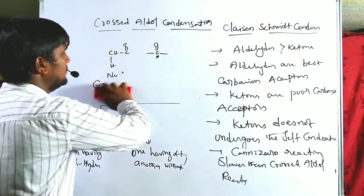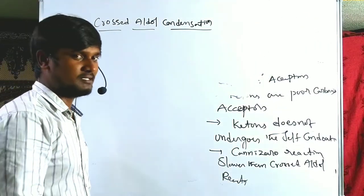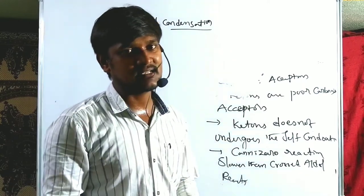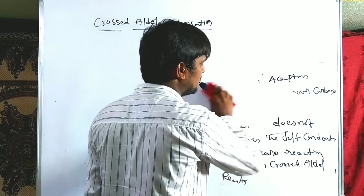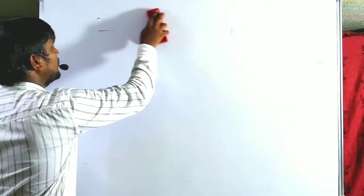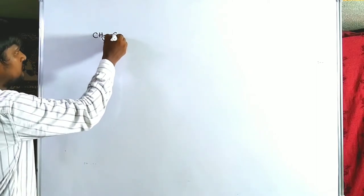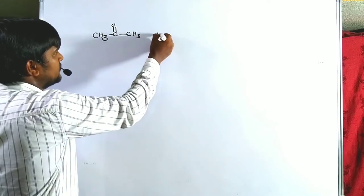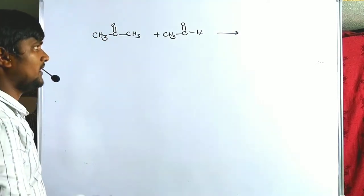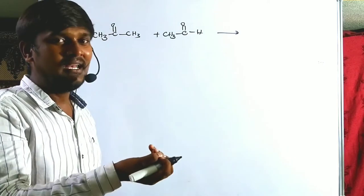Now let us go through one example with the mechanism. Key points: aldehydes are more reactive than ketones, aldehydes are the best carbonyl acceptors, ketones are poor carbonyl acceptors, and due to poor carbonyl acceptor capacity, ketones cannot undergo self-condensation — meaning ketones do not give aldol products with a weak base. Now for the mechanism, we take one ketone and one aldehyde — the third or second example.